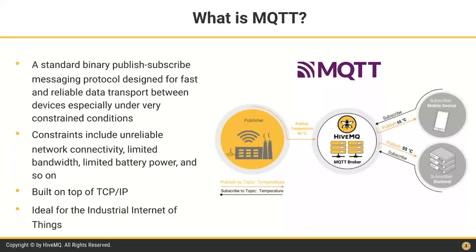MQTT works in wired environments, but especially well in unreliable environments with poor network connectivity — for example, a factory or oil site somewhere remote where only satellite communication is available. MQTT allows you to send data under any circumstance, even over such networks. It's built on top of TCP/IP and is the ideal communication protocol for the Internet of Things. Many Fortune 500 companies use MQTT to move data in the factory, from factory to cloud, and factory to factory worldwide on all continents.